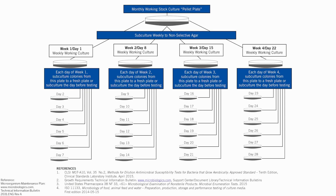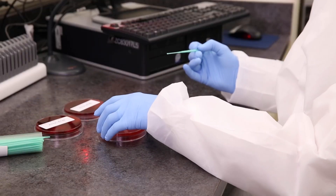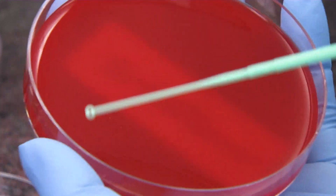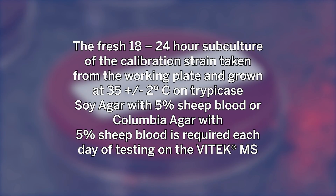After incubation, the stock plate is stored at 2 to 8 degrees Celsius and is used to subculture a weekly working culture plate on the same media — trypticae soy agar with 5% sheep blood or Columbia agar with 5% sheep blood. This working plate is incubated for 18 to 24 hours at 35 plus or minus 2 degrees Celsius. The working plate serves two purposes: it is used to make the calibrator spot on the first day post-incubation, and to subculture new calibrator plates for days 2 through 7. A fresh 18 to 24 hour subculture of the calibration strain is required each day of testing on the Vitek MS.